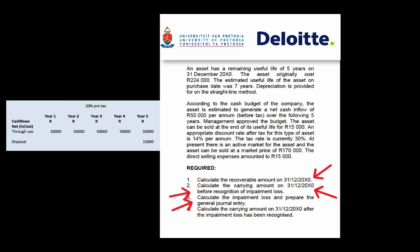After which they require the carrying amount after the impairment loss. The required section will normally not be given in such a step-by-step approach — you'll normally be asked to do a statement of financial position, part of which will be the impairment of the property, plant and equipment line item.